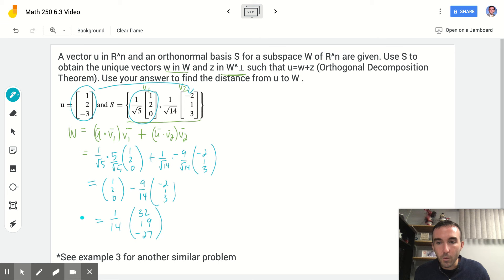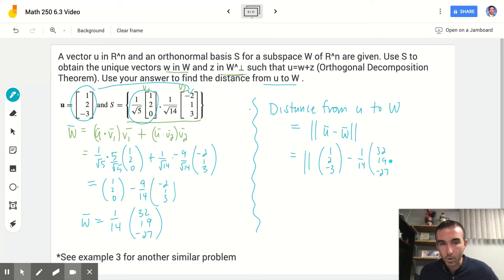That's the first part of the problem. Now for the distance between the two, we want to find the distance from u to W. So for the second part, sometimes the book refers to this as z, but to keep the number of letters down, we will simply just find the norm of vector u minus vector w. We'll just keep it really simple here. And to do that, we simply take the 1, 2, negative 3 given to us, and we subtract the answer that we just found, this 1 14th, 32, 19, and negative 27.